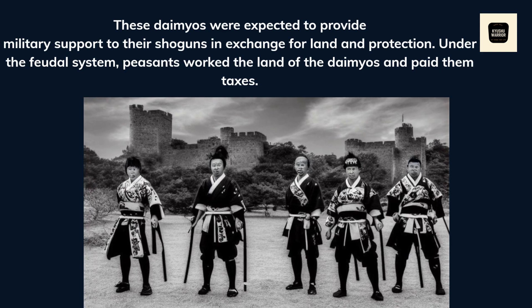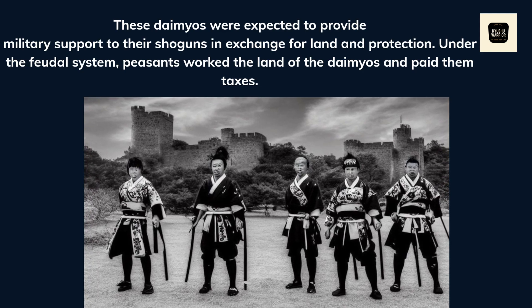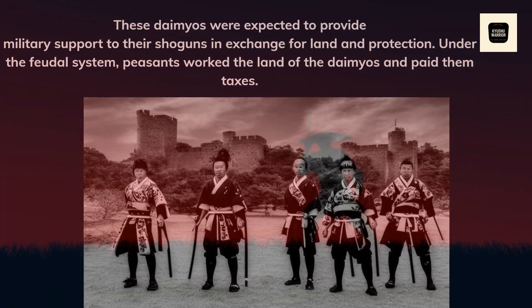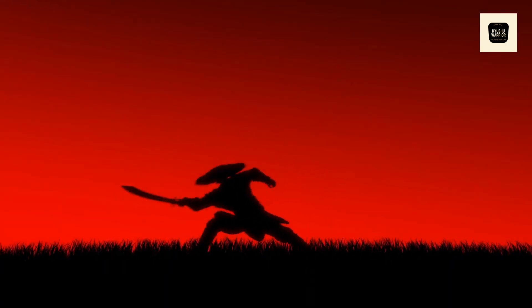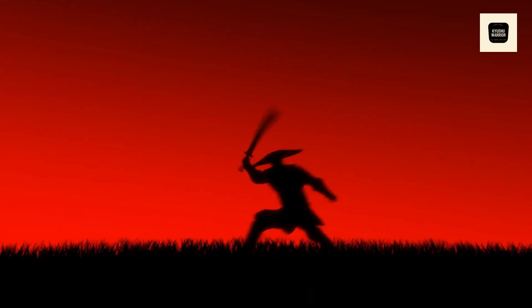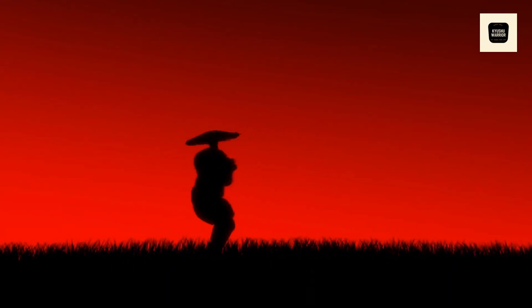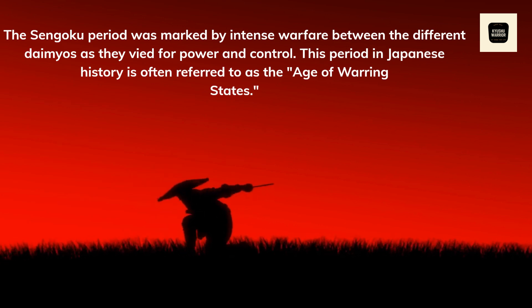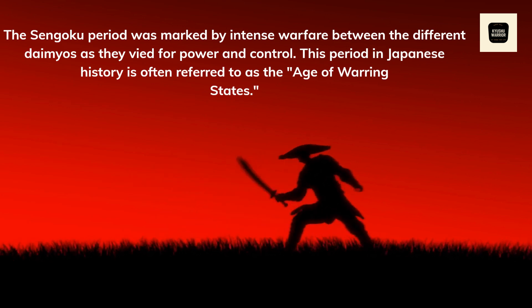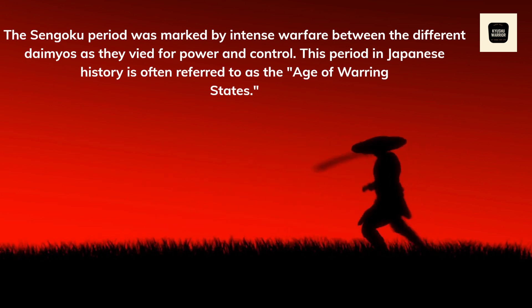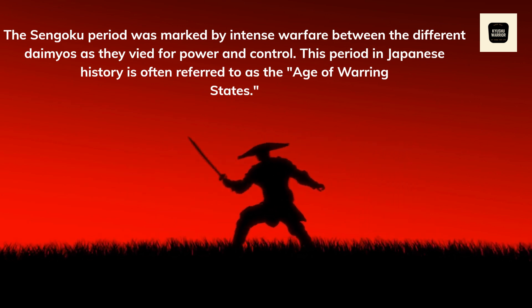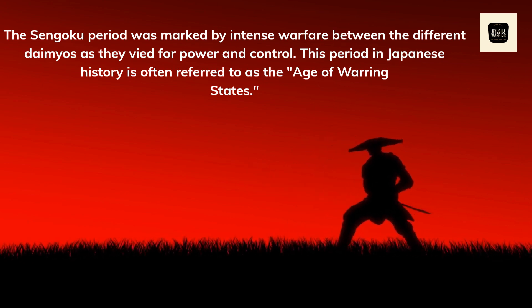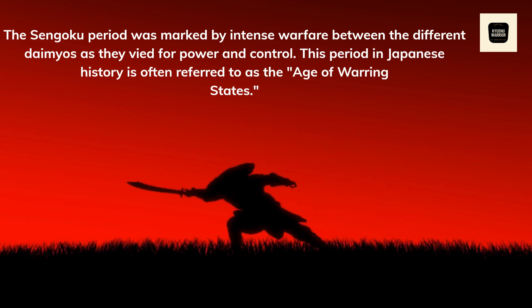Under the feudal system, peasants worked the land of the daimyos and paid them taxes. The Sengoku period was marked by intense warfare between the different daimyos as they vied for power and control. This period in Japanese history is often referred to as the Age of Warring States.